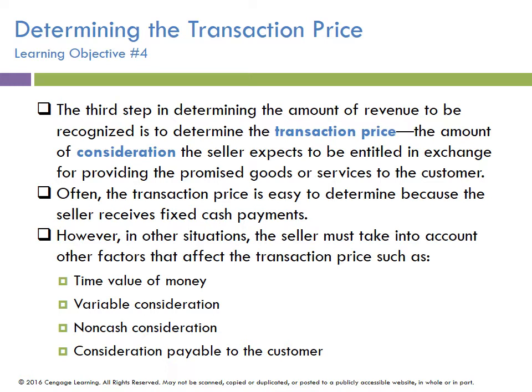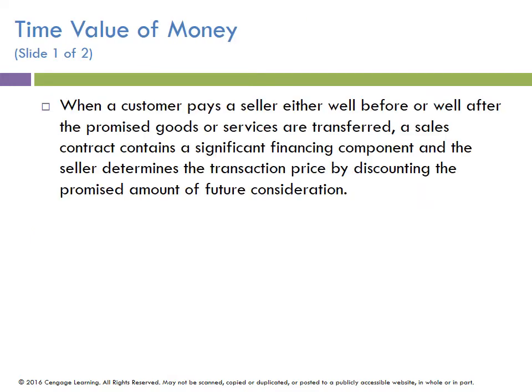Now let's look at the transaction price itself — step three. The transaction price is the amount of consideration the seller expects to be entitled to in exchange for the goods or services. Often the transaction price is easy because it's usually fixed and stated right in the contract. However, there are other situations where the seller must take into account factors that affect transaction price: time value of money — if the payment is $10,000 a year for five years, how much is that worth today; variable consideration; non-cash consideration such as receiving stock; and consideration payable to the customer.